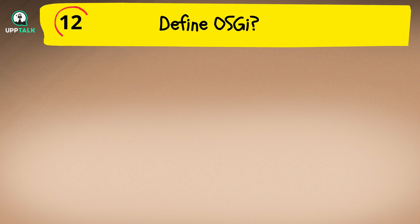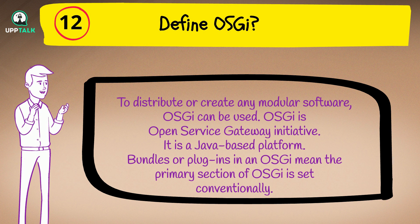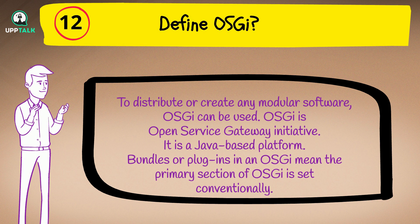Question 12: Define OSGI. Answer: To distribute or create any modular software, OSGI can be used. OSGI stands for Open Service Gateway Initiative. It is a Java-based platform. Bundles or plugins in an OSGI mean the primary section of OSGI, set conventionally.